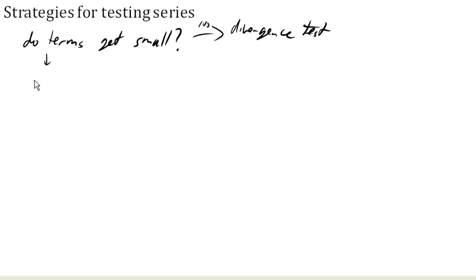Then the next thing we might want to say is, is it alternating? Because if it is, then we can use the alternating series test, which has the advantage that it's very easy to do. All you have to do is make sure that the limit of the individual terms goes to 0 and that each term gets subsequently smaller, which is much easier to do than any of the other tests.